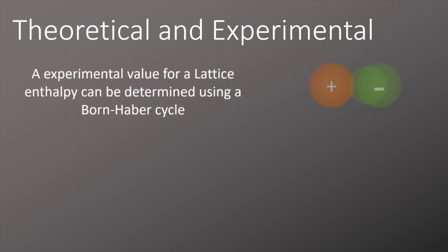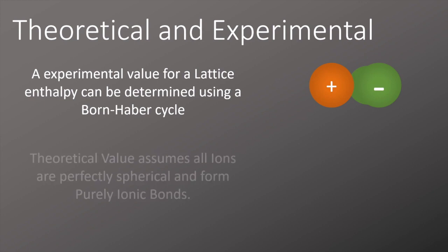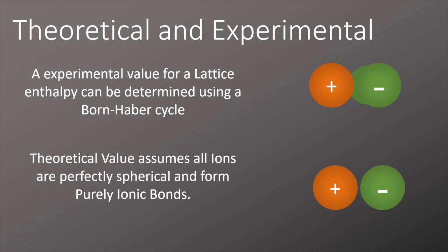A Born-Haber cycle takes all experimental data and combines it together to work out a value for lattice enthalpy. Now it is possible to work this out theoretically, but there is a difference to the values. And this is because a theoretical value assumes that all the ions are perfectly spherical and form purely ionic bonds. This isn't the case. There's often some covalent character within the bonding between these two ions.